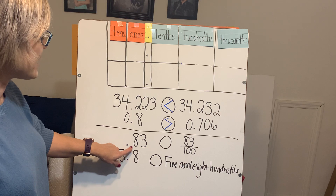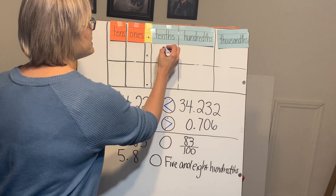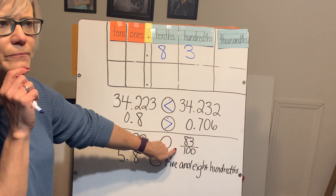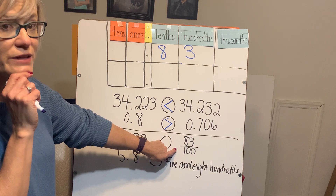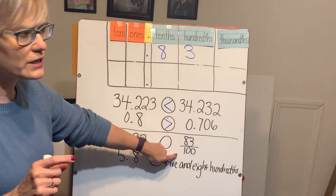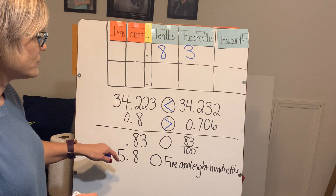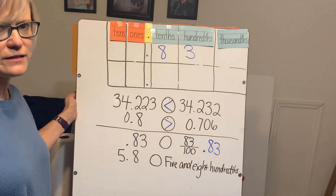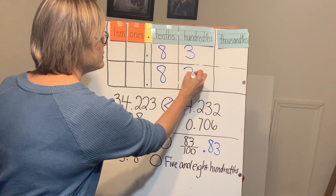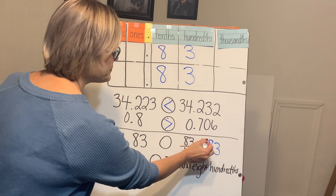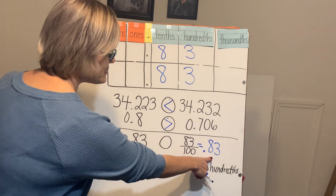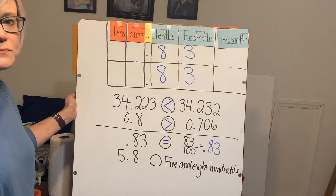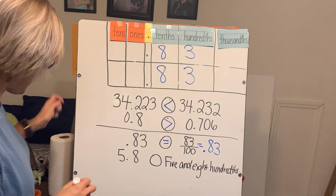This fraction is eighty-three hundredths. When I write that on the chart, it's eighty-three hundredths. Now, how do I write eighty-three hundredths as a decimal? We put a decimal and then eighty-three hundredths — that's 0.83. So these two are equivalent. When we compare eighty-three hundredths to eighty-three hundredths, they're exactly the same. Those are equal.